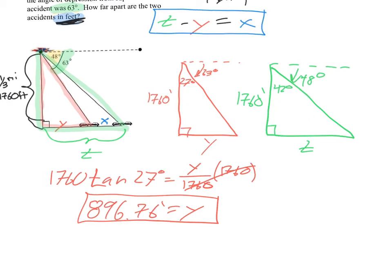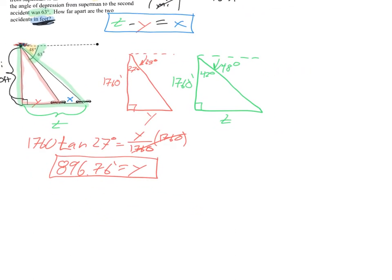Well, we can do the exact same process to figure out what z is, because it's also just a right triangle where we have an angle, we have an opposite, or we want the opposite and we have the adjacent. So let's do it. All right. So the tangent of 42 degrees equals the opposite, which is z, over the adjacent, which is 1,760.